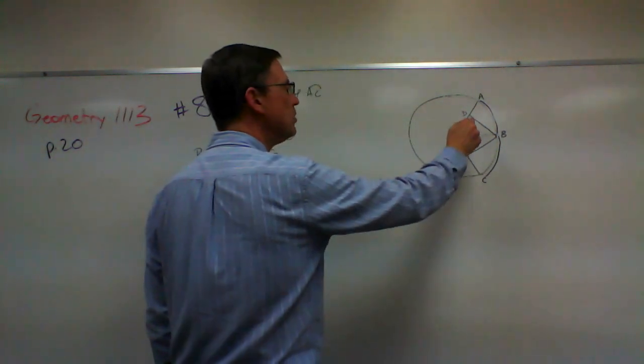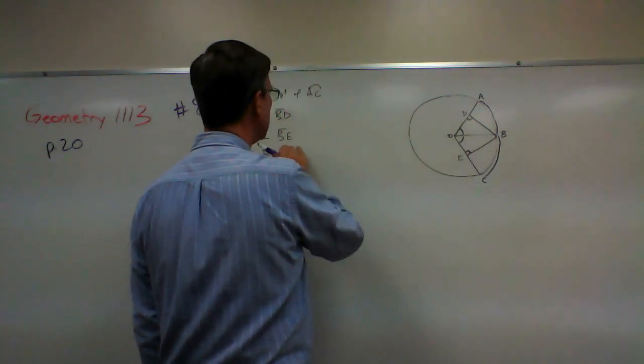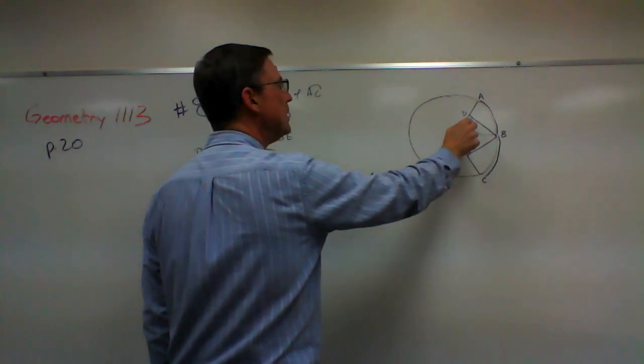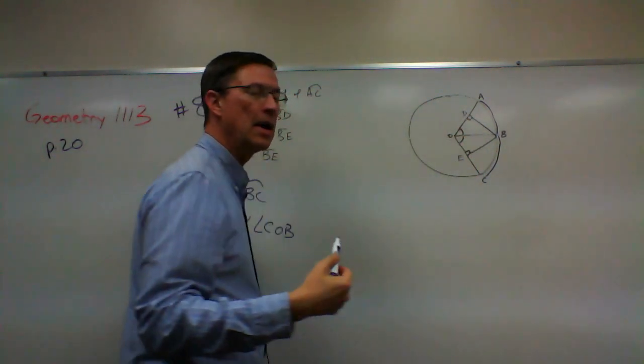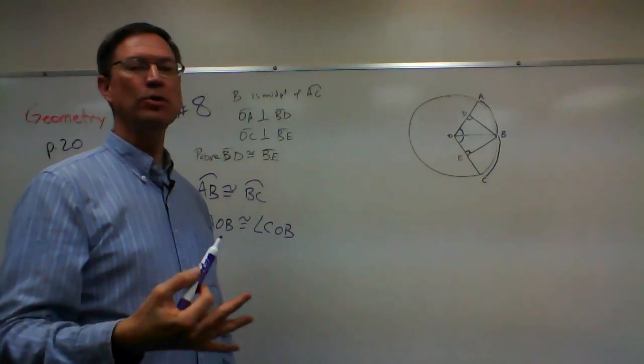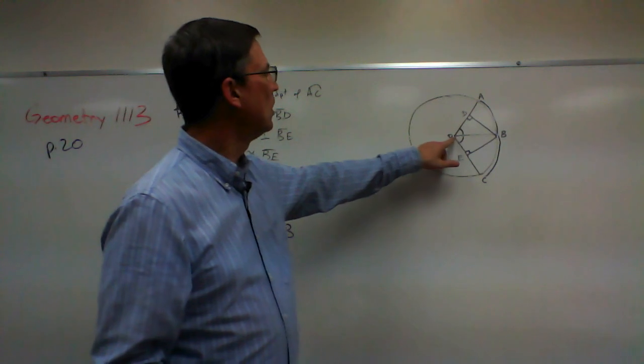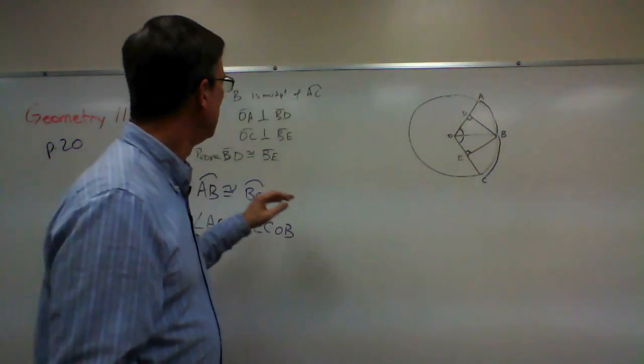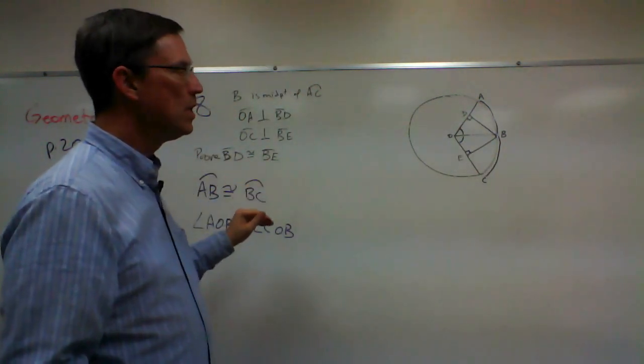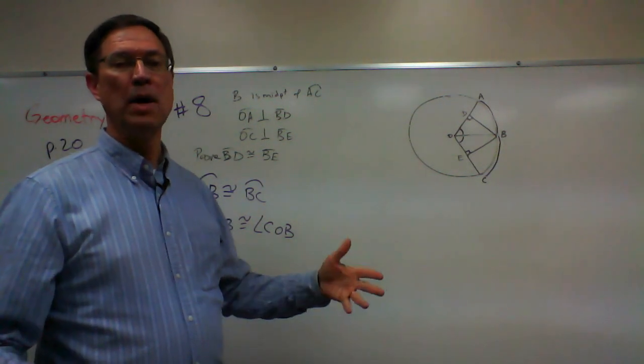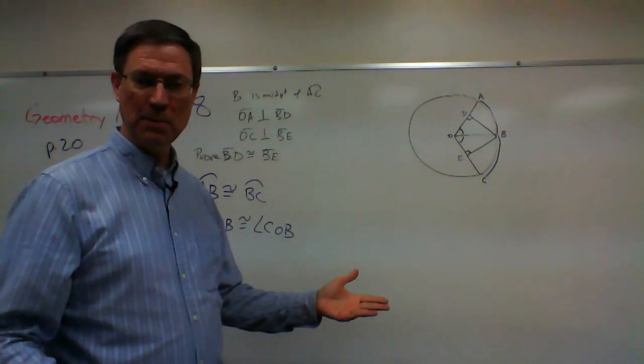Now we mentioned that these are perpendicular. They told us that. So that means that these are right angles. Now remember, we have to actually state that. So we can say that angle ODB and angle OEB are right angles, and then we have to make the next statement, which is like—